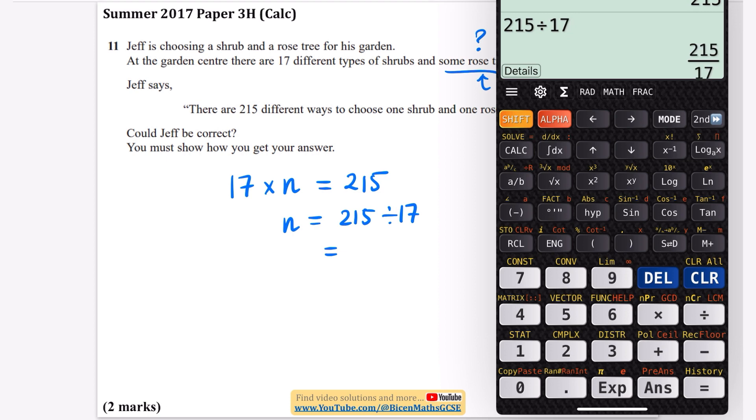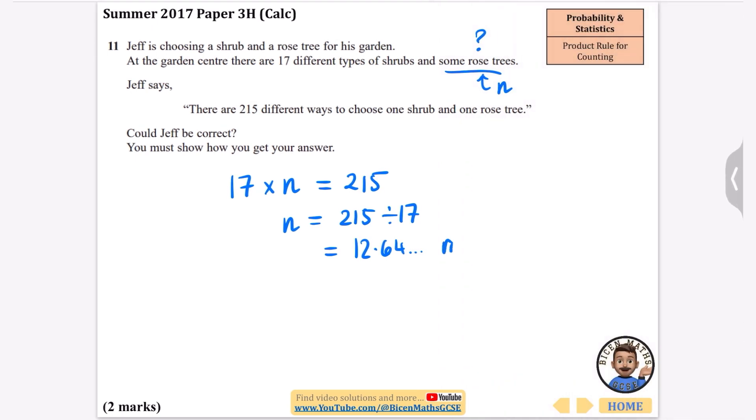So if we do 215 divided by 17 we get 12.64 rose trees, and I don't think 12.64 rose trees makes any sense in this particular case. So we're going to say that this doesn't work. Could Jeff be correct? We're going to say no, n would need to be an integer.